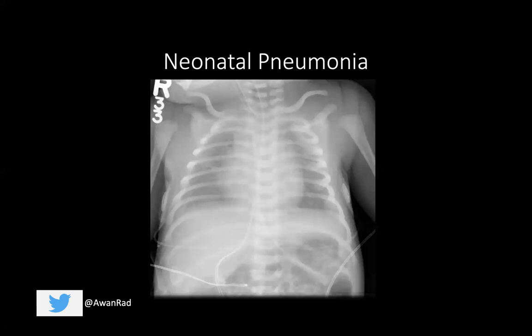Otherwise the imaging is essentially indistinguishable from RDS. Clinically, these patients will present with fever, tachypnea, cough, grunting, sepsis, leukocytosis, and positive cultures — most of which are not seen in RDS. We typically screen moms at 35 to 37 weeks gestation for Group B Strep and give intrapartum prophylaxis with penicillin during labor. Often these patients are preemies and the mothers don't get screened, which is why neonatal pneumonia occurs. Look for that pleural effusion as a potentially distinguishing feature.